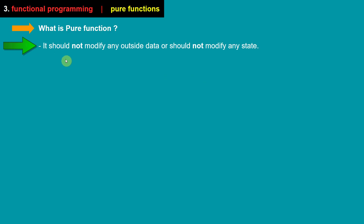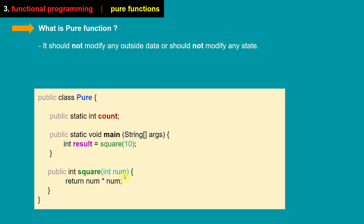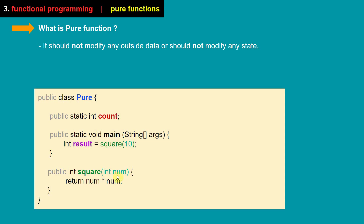A pure function is a function which does not modify any data outside the method and does not modify any state. Consider this square method — it takes an input number and returns the square of that number. It does not depend on an external variable like count. Any function which does not modify data outside itself, does not modify any input argument, and does not make database changes like insert or update queries — that is one important property of a pure function.